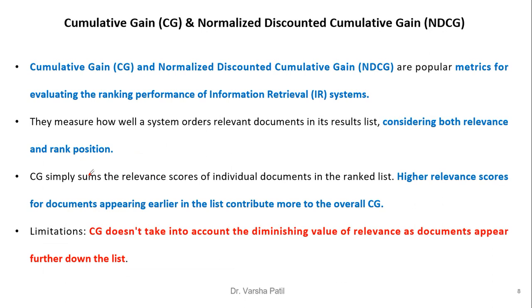Cumulative Gain (CG) and Normalized Discounted Cumulative Gain (NDCG) are popular metrics for evaluating the ranking performance of IR systems. They measure how well a system orders relevant documents in its result list, considering both relevance and rank position. CG simply sums the relevance scores of individual documents in the ranked list. Higher relevance scores for documents appearing earlier in the list contribute more to the overall CG. A limitation of CG is that it does not account for the diminishing value of relevance as documents appear further down the list.